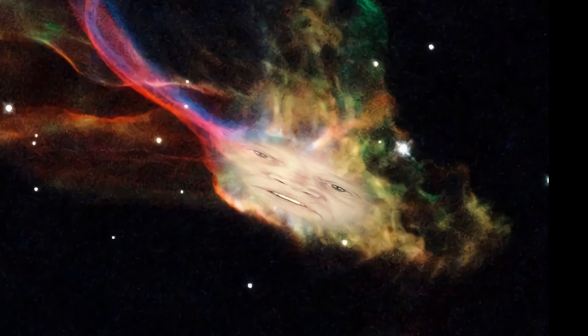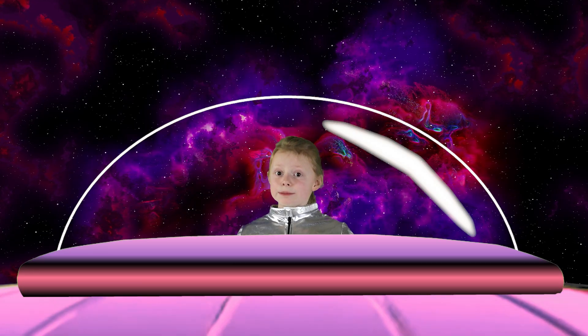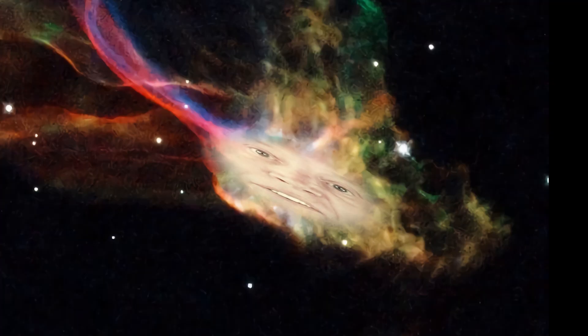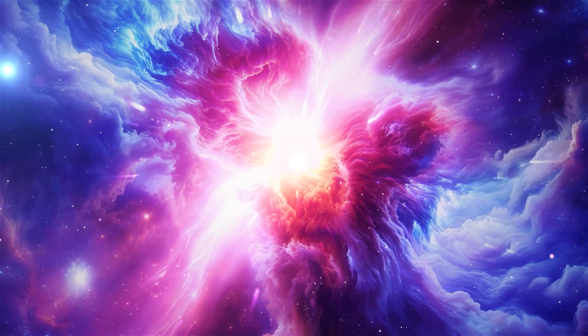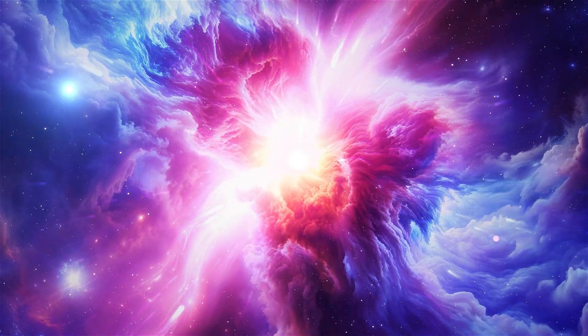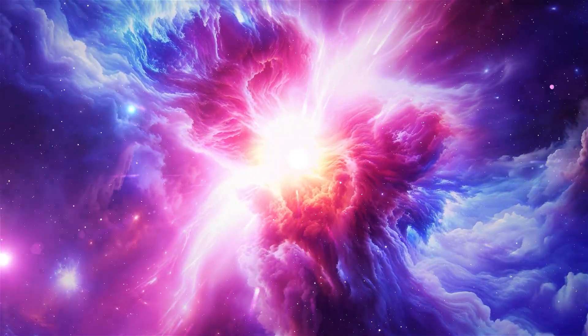Greetings, young traveler. I am the Veil Nebula, the remnants of another supernova, but far older than the Crab Nebula. Like a space painting. Thank you. My strands of gas and clouds stretch over 100 light years. My colors of pink, green, and blue are from hydrogen, sulfur, and oxygen.